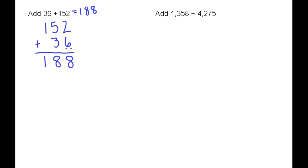This process always works. What's happening here is you can think of money. The ones place represents $1 bills, the tens place represents $10 bills, and the hundreds represents $100 bills. If you have 2 $1 bills plus 6 $1 bills, you have 8 $1 bills.